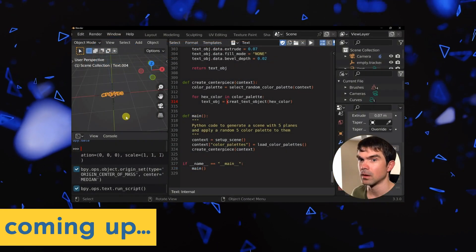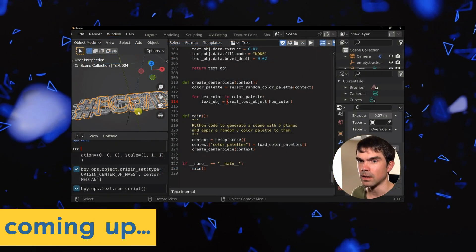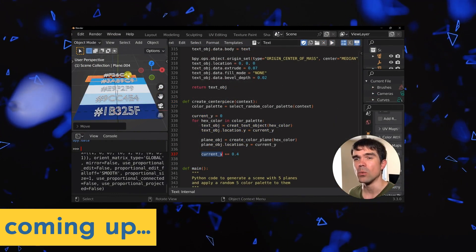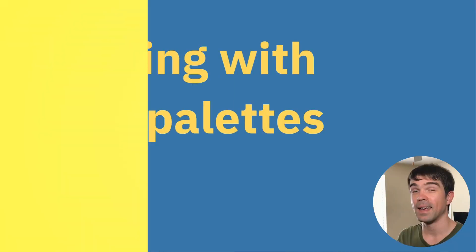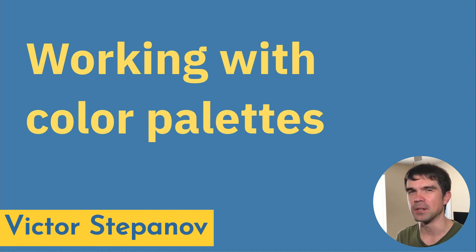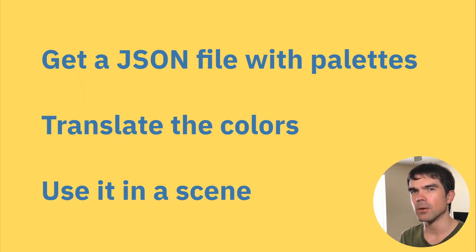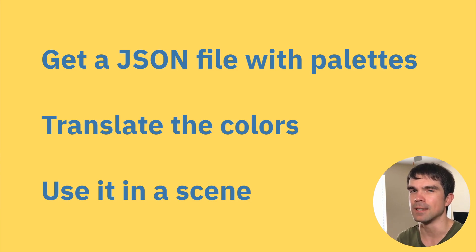In this video we're going to be reading color palettes from a JSON file and then using one of the color palettes to generate a simple scene. I'm Viktor Stepanov and I'll be guiding you through this Blender Python tutorial. Today we're going to be reading color palettes from a JSON file and using that in Blender. We're going to translate those color palettes into something that Blender and Python can understand, then use that to generate a simple scene.